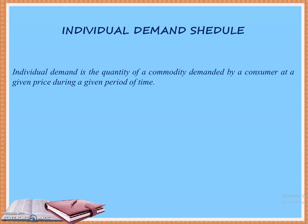It is the quantity of a commodity that is demanded by a consumer at a given price during a given period of time. What is individual demand? It is the quantity that the consumer demands at a particular price — this is the individual demand schedule.